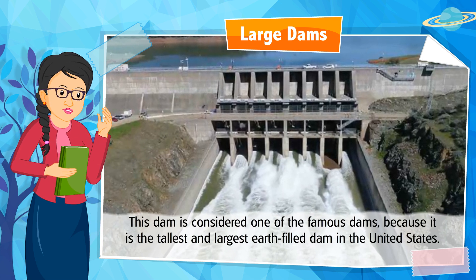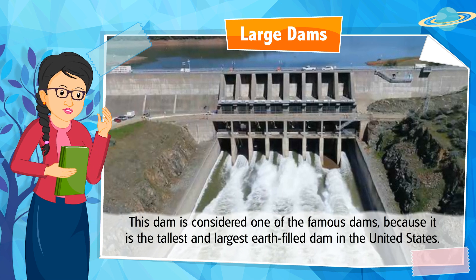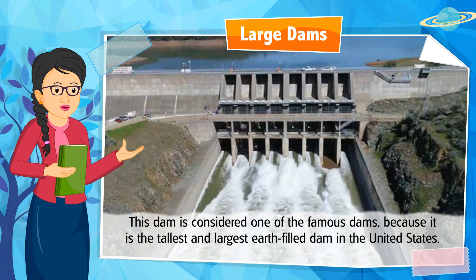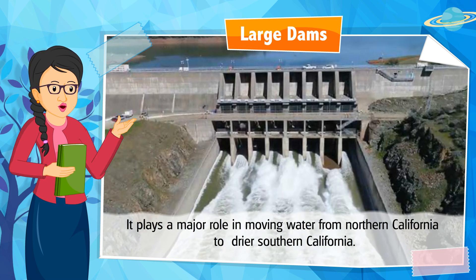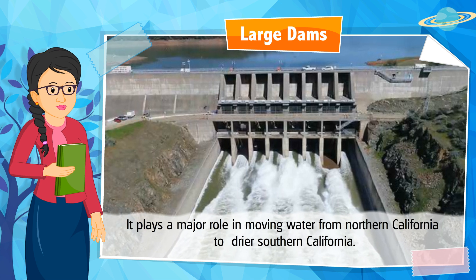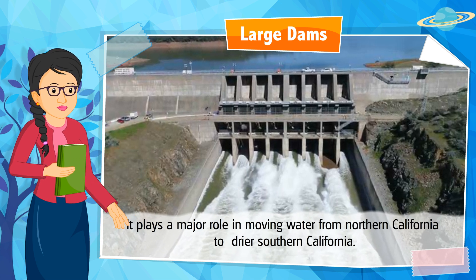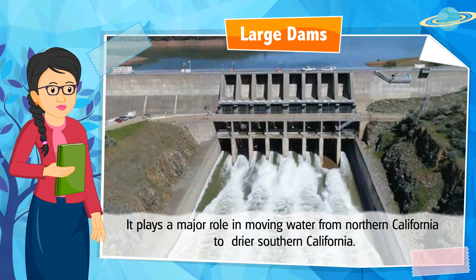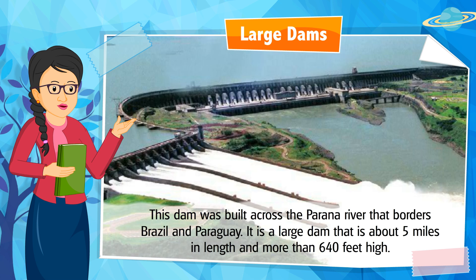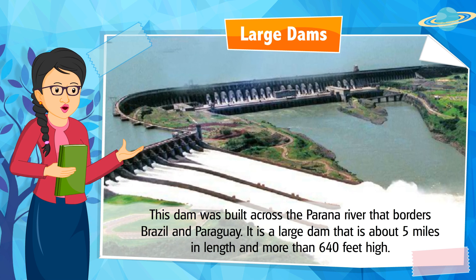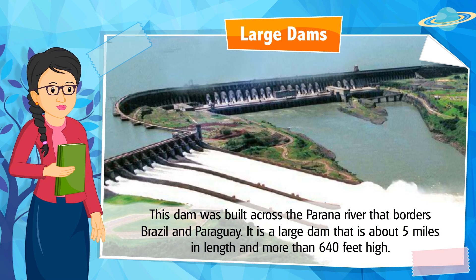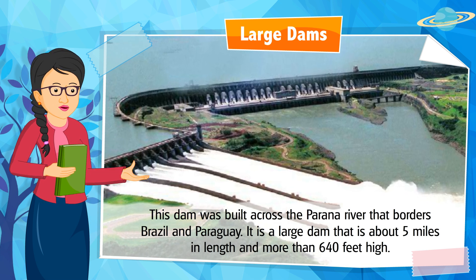This dam is considered one of the famous dams because it is the tallest and largest earth-filled dam in the United States. It plays a major role in moving water from northern California to drier southern California. Can you identify the name? It is Oroville Dam.